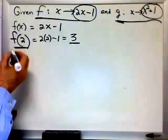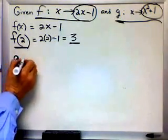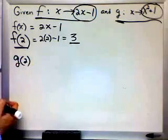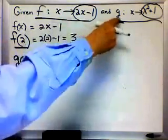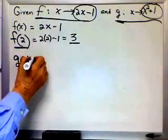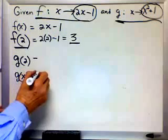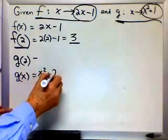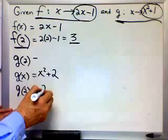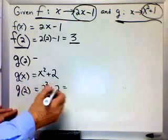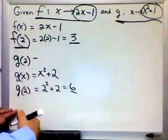All right, here's another tricky question. What if I said to find g of 2? How do you know which equation to use? There's two different equations. The g equation, right. So then I write g of x equals x squared plus 2. So g of 2 means to go 2 squared plus 2. 4 plus 2, 6. g of 2 equals 6. That wasn't so bad.